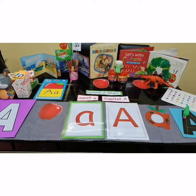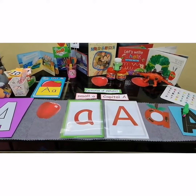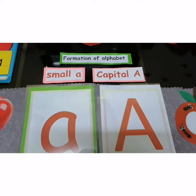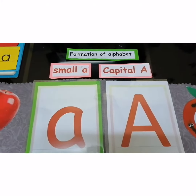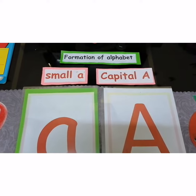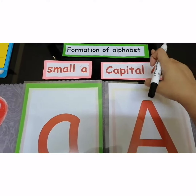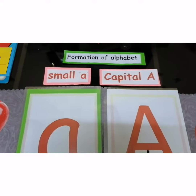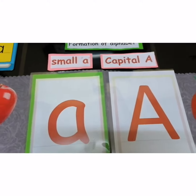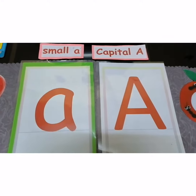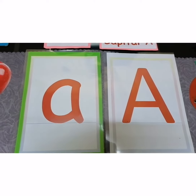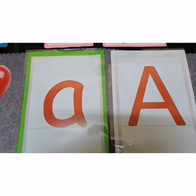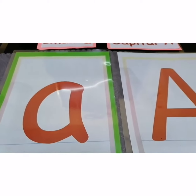My dear kids, now I'm going to tell you about how we are going to form capital A and small a. We are going to learn about the formation of alphabet small a and capital A. Here is small a and here is capital A, and I'll show you how we are going to form this letter.